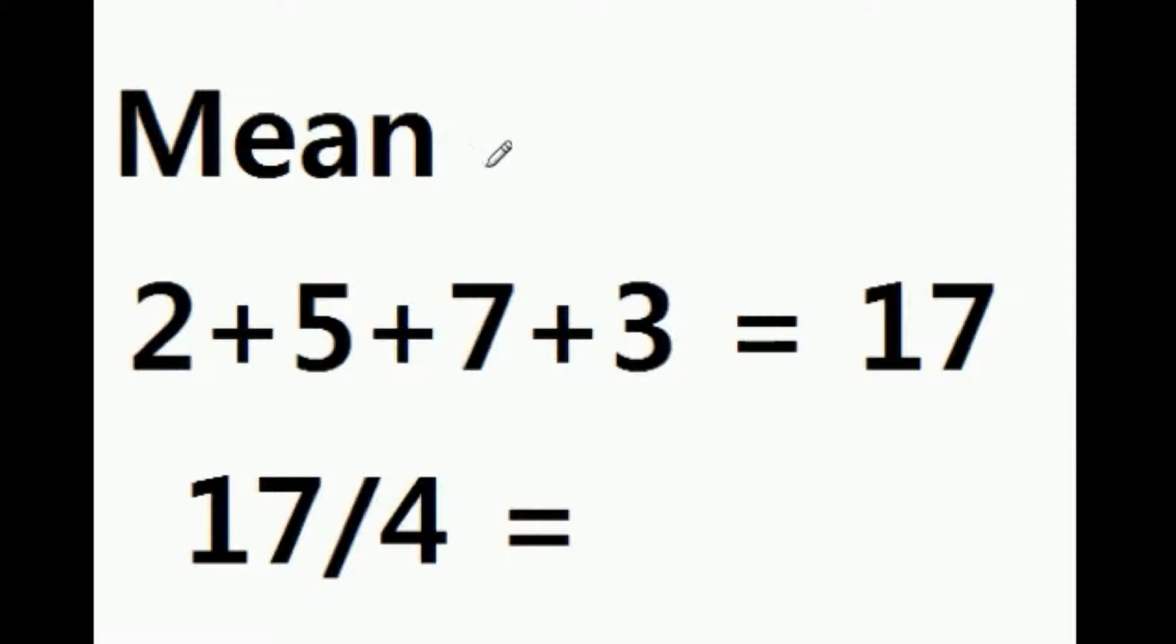Well, let's look at the mean. I'm going to add up four numbers: 2 plus 5 plus 7 plus 3. 7 plus 7 is 14 and 3 is 17.